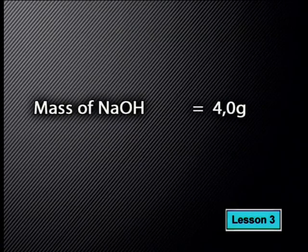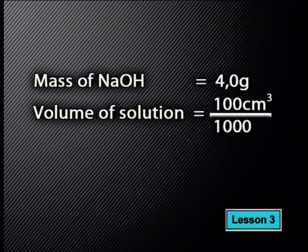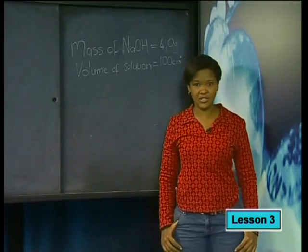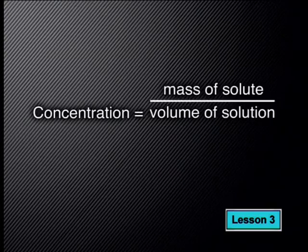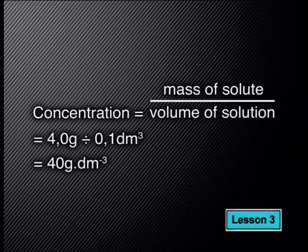Now we're ready to start working out the concentration of Aaron's solution in grams per decimeter cubed. We know the mass of the solute, but the volume is in centimeters cubed, so we need to convert it. To do the conversion, divide 100 centimeters cubed by 1,000, giving a volume of 0.1 decimeters cubed. Then concentration equals mass divided by volume: four grams divided by 0.1 decimeters cubed gives us 40 grams per decimeter cubed, written as g·dm⁻³.